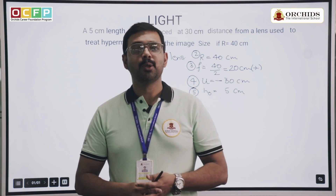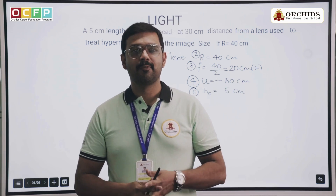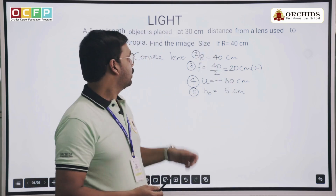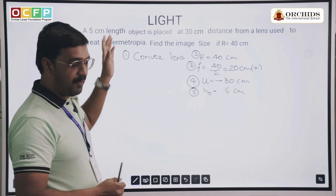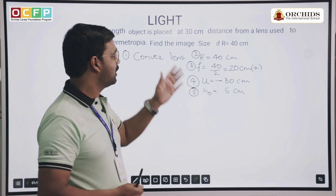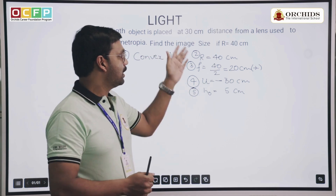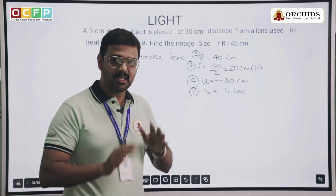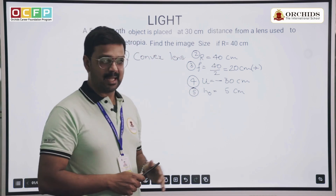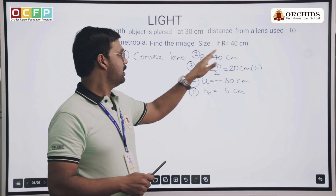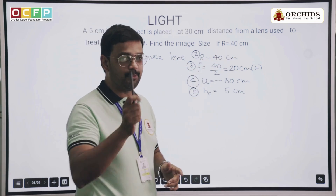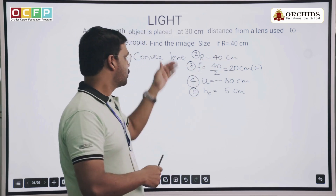Here I am today to present you a question from the chapter on lenses. The question says that there is a 5 centimeter length object placed at 30 centimeters distance from a lens which is used to treat hypermetropia. You have to find out the image size, and the radius of curvature is given as 40 centimeters.